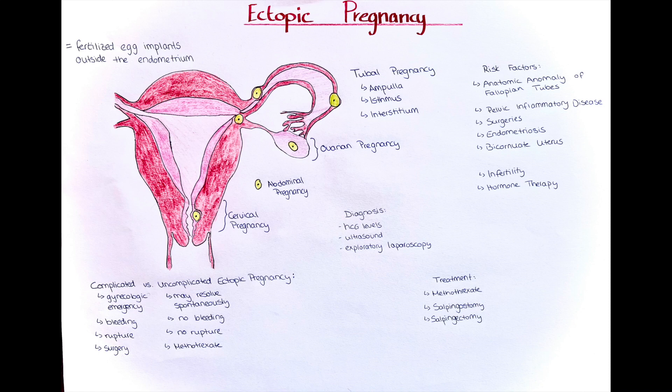We can also measure the beta-HCG level, which would typically be high in an ectopic pregnancy. However, the HCG level only starts to rise after the 8th day of ovulation. When the beta-HCG level reaches over 1,500 to 2,000 mUnits per milliliter, we call it the beta-HCG discriminatory level — the level at which an intrauterine pregnancy should be visible on ultrasound. Inability to visualize a uterine pregnancy at this discriminatory level strongly suggests an ectopic pregnancy.